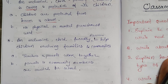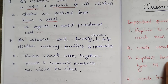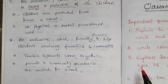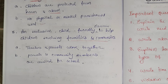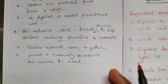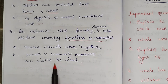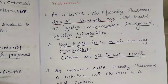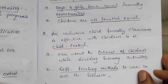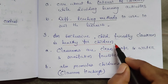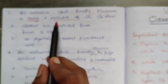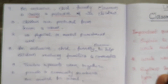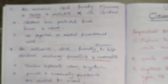The fifth characteristic: an inclusive child-friendly classroom involves families and communities in learning. Teachers and parents have to work together — only school is not enough. Parents and community members are invited to the school. Families and communities are involved in the learning process.